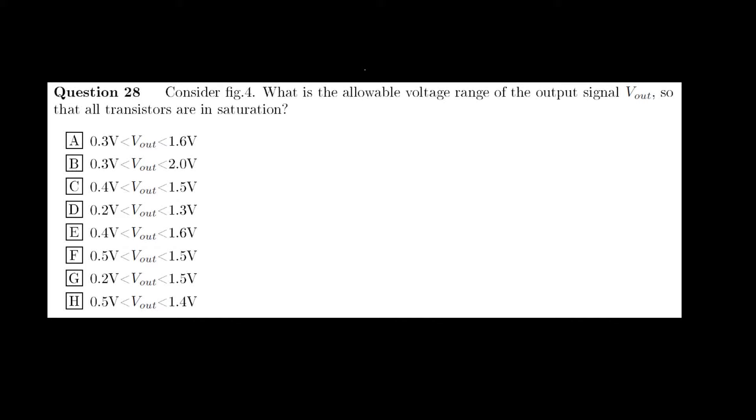This video will discuss question 28. Consider figure 4. What is the allowable voltage range of the output signal Vout so that all transistors are in saturation? Eight options are given for possible voltage ranges.